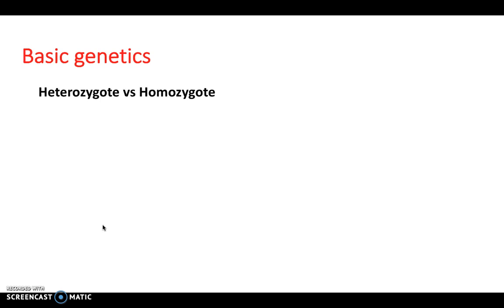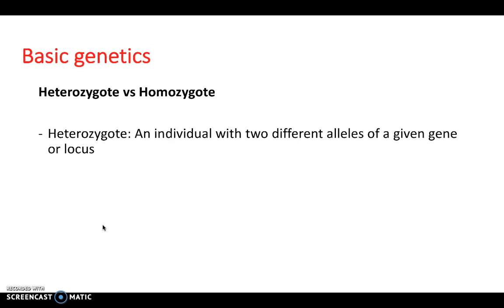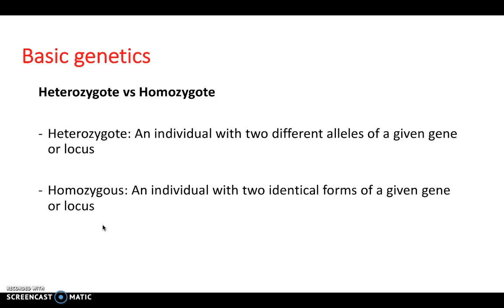Also key terms are heterozygote and homozygote. So a heterozygote is an individual with two different alleles of a given gene or locus. And homozygote is an individual with two identical forms of a given gene or locus.